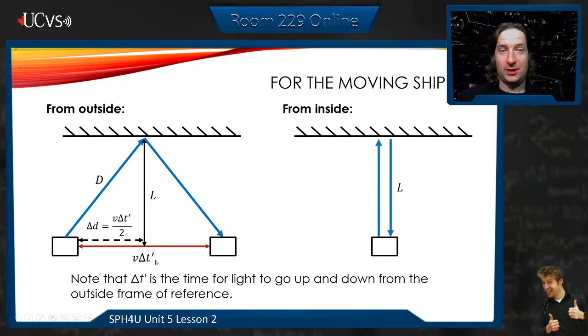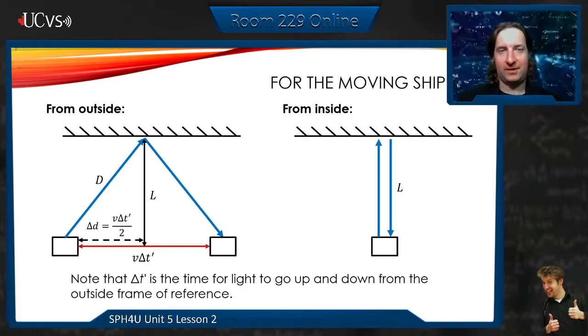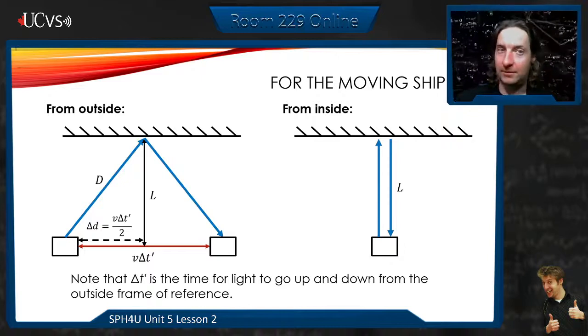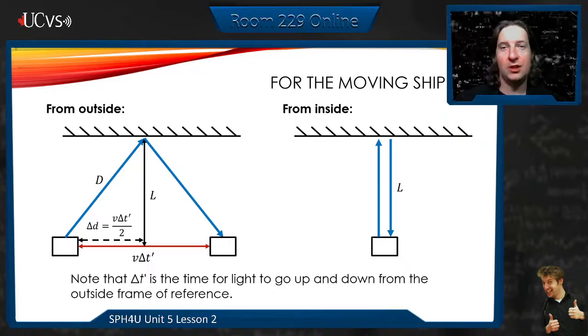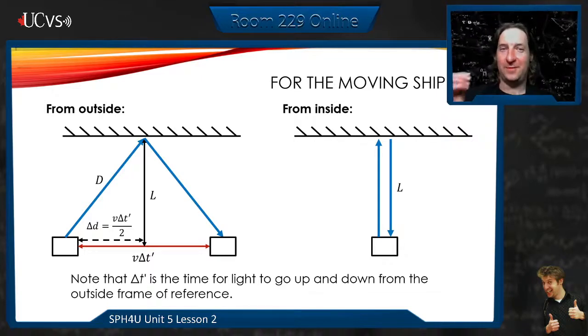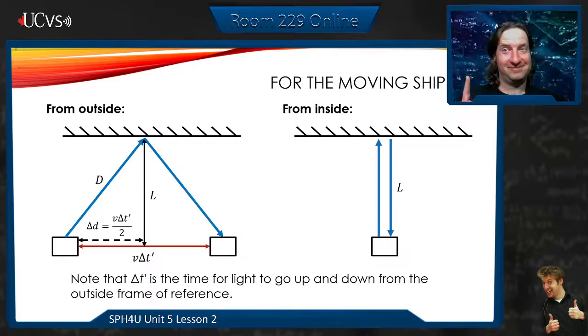But if we're inside the ship, the observer who's inside the ship doesn't see any of this happening. They just see the light go up and down, travel a distance L in a time delta T. Not delta T prime now. Delta T prime and delta T. So the time it takes, the time that's happening from the outside and the time from the inside are different.